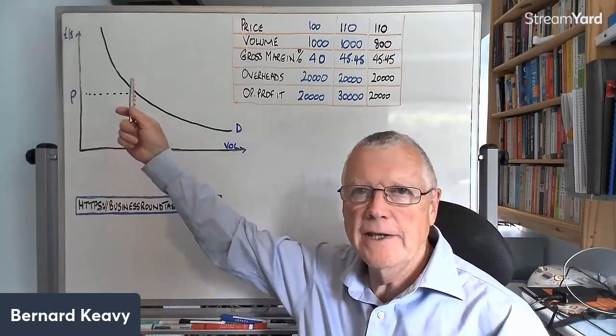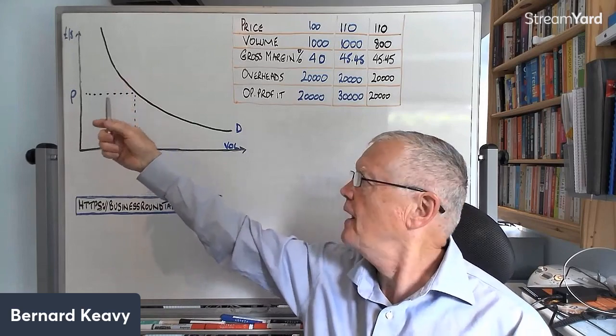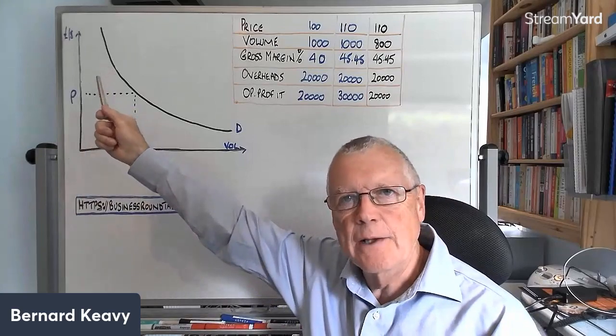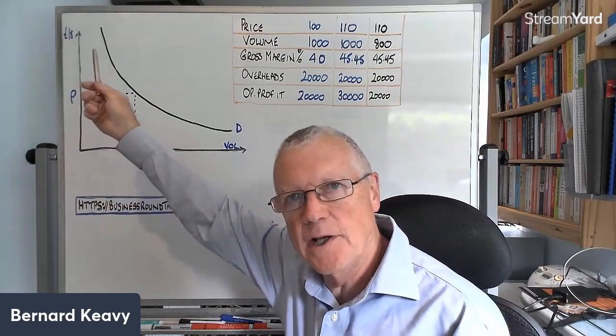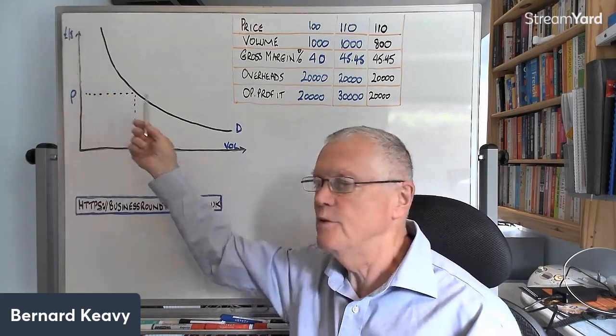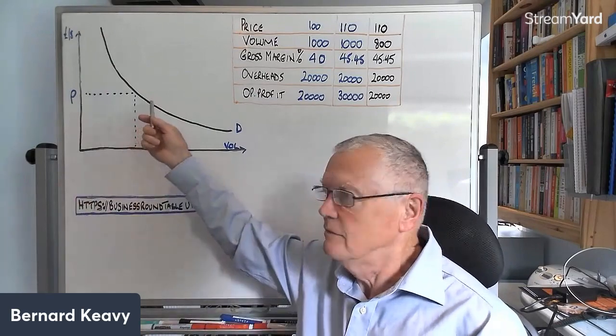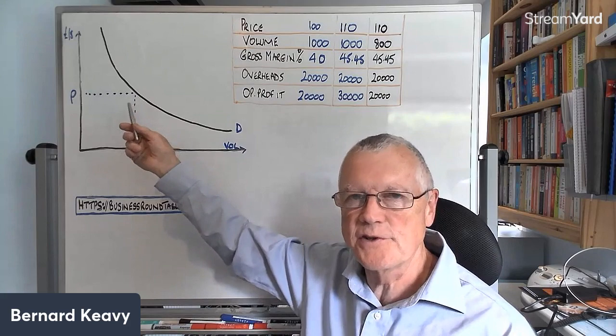Hello, what I have here is a demand curve. We're all faced with one of these, and what it shows is that if we knew how much we could sell at various prices, we'd find some sort of relationship like this. If we charge higher prices we'll sell less; if we charge lower prices we'll sell more. The trouble is most people don't know what this actual relationship looks like in the real world for their product or service.